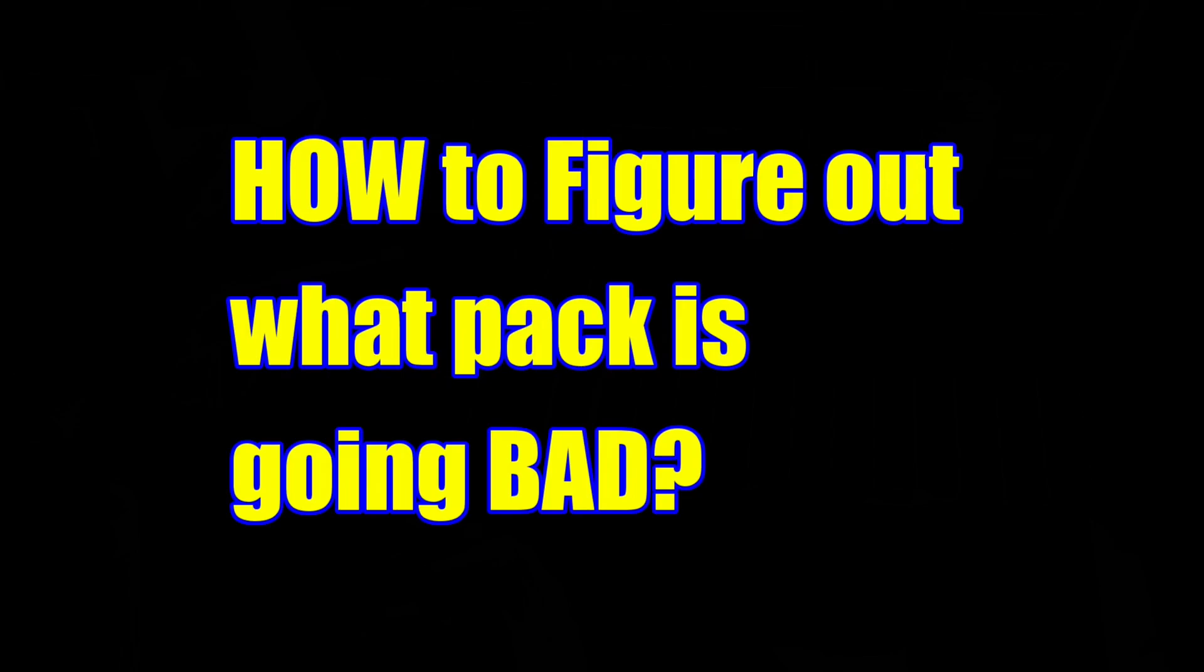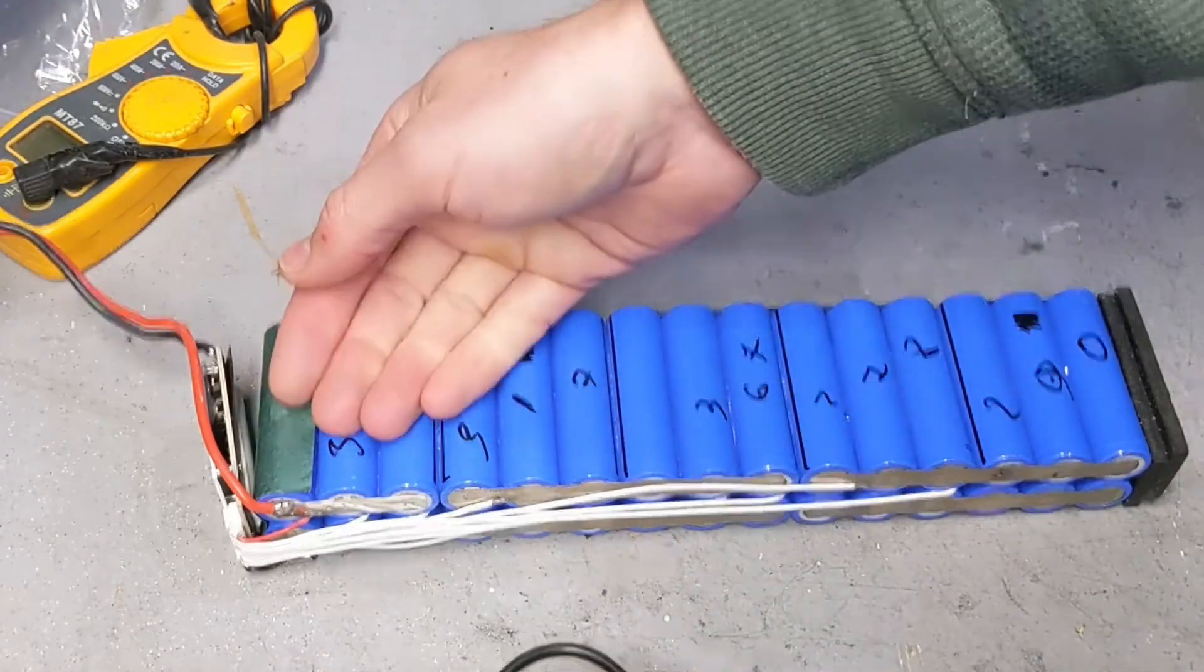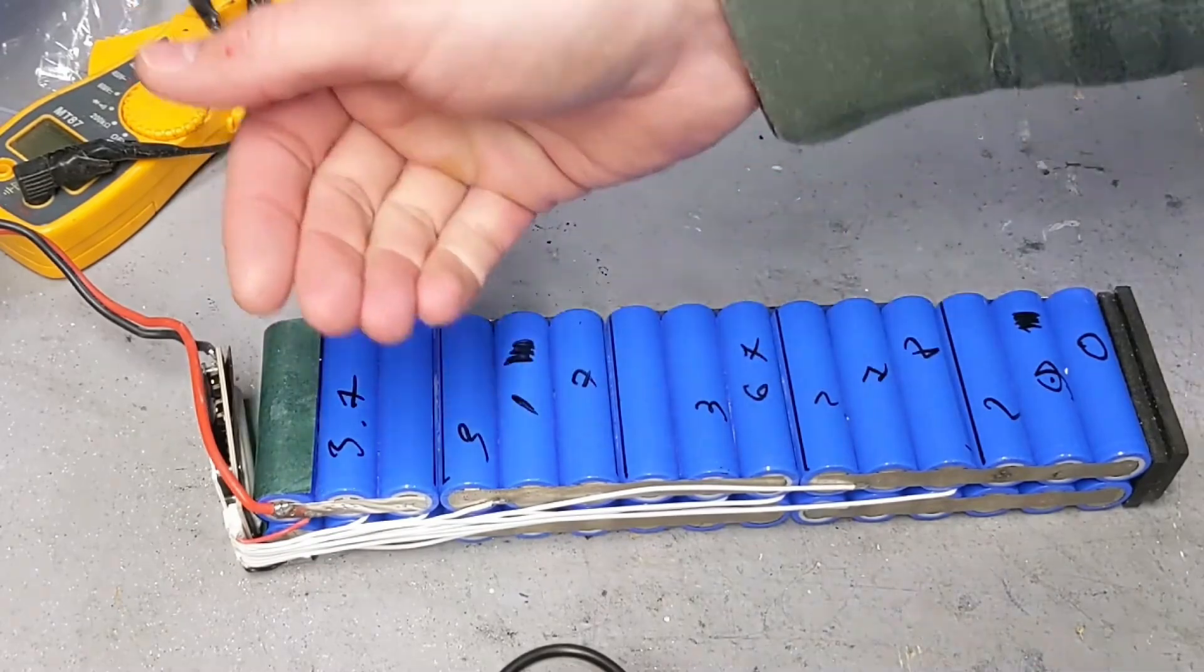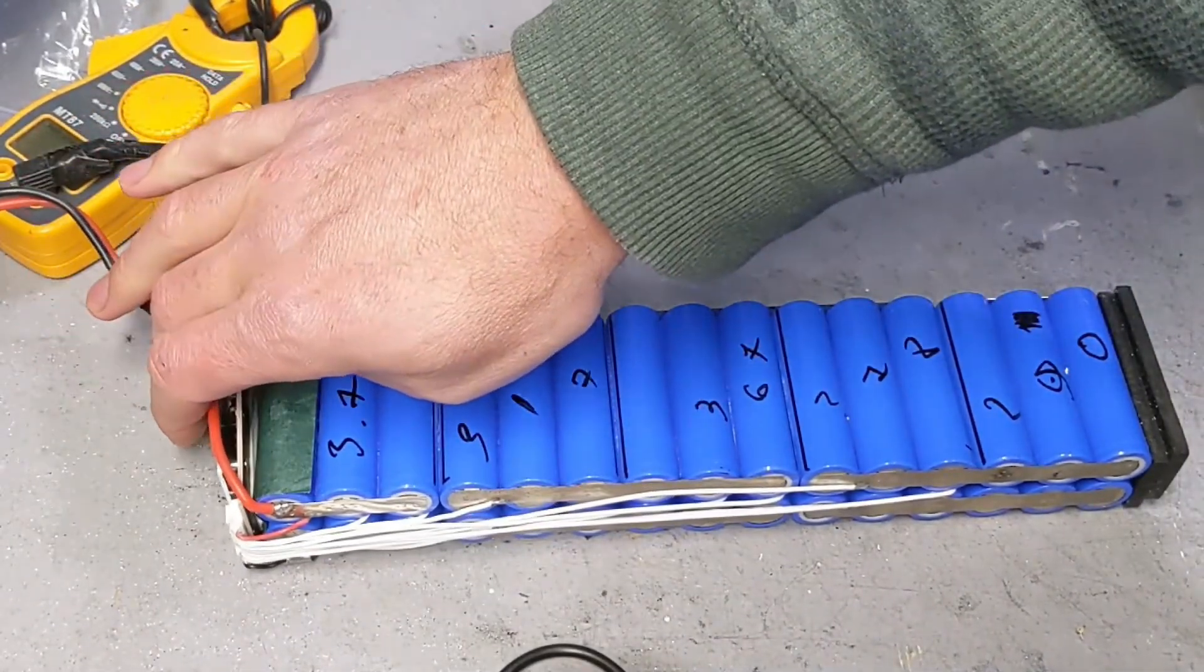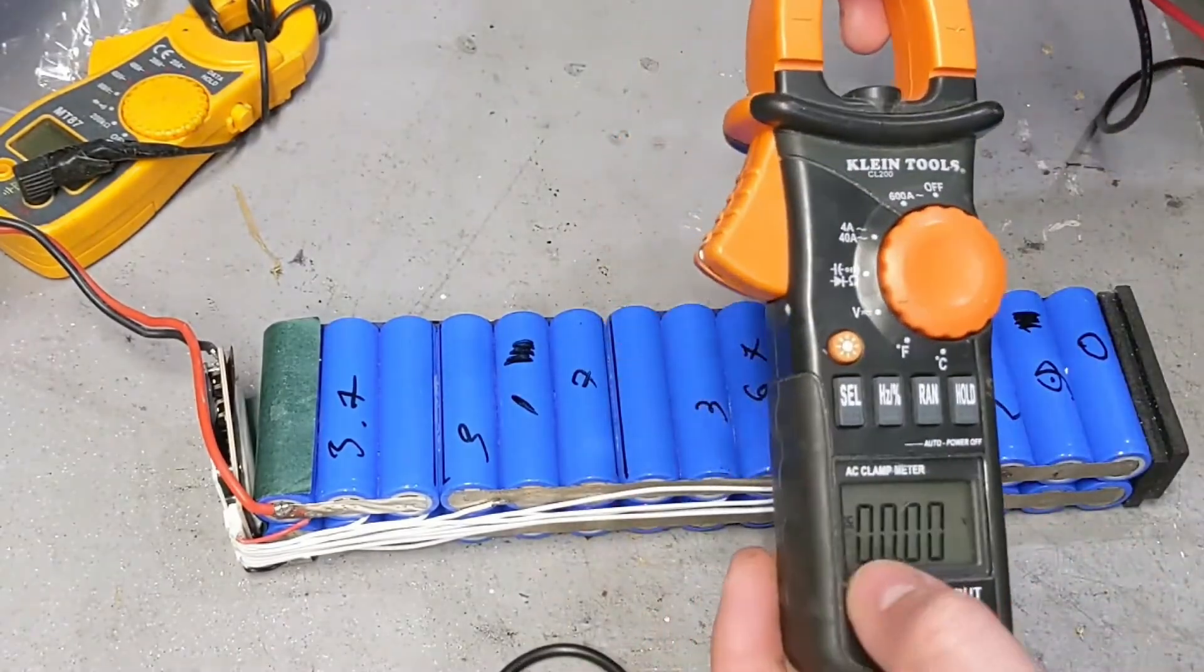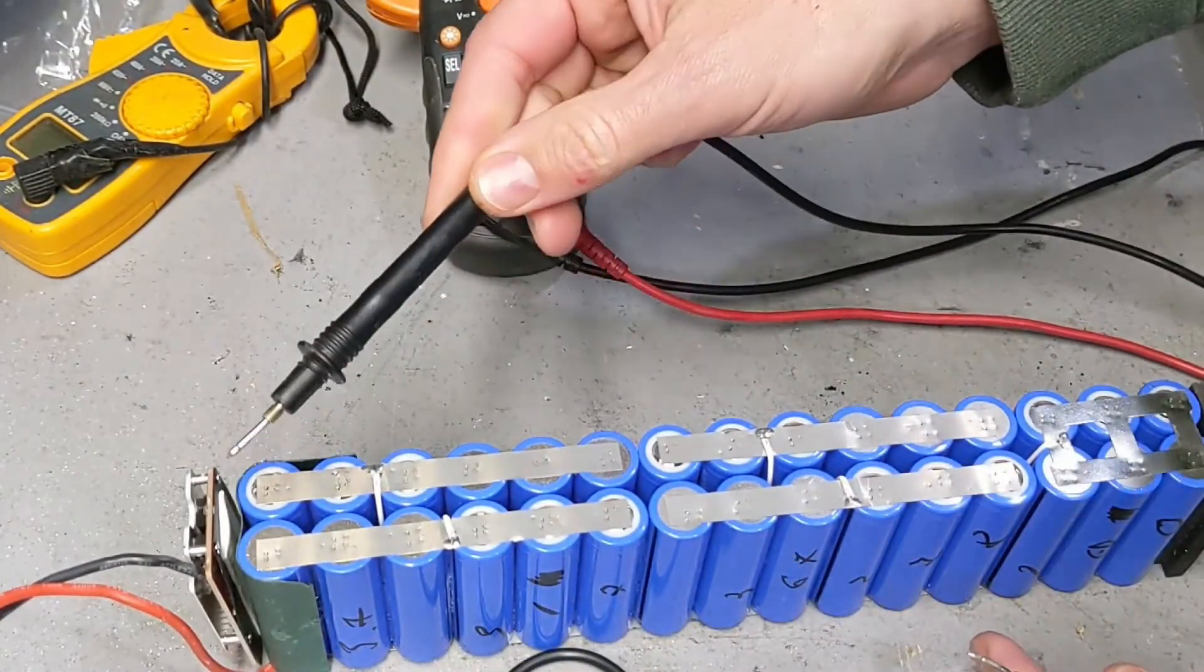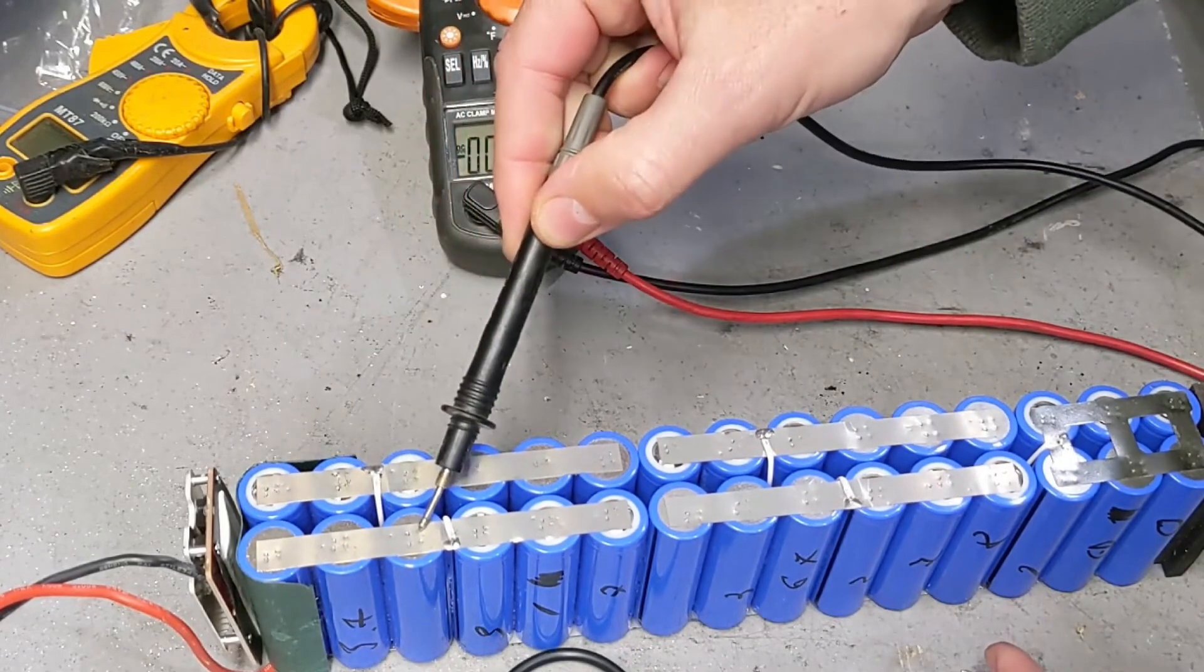First of all, what you have to do is discharge the battery. So if you have a bicycle, this is from a bicycle, just ride the bicycle until it stops. When the BMS stops and doesn't give you any voltage, then you could come over and look at the cells. Take the voltmeter, put it on DC.